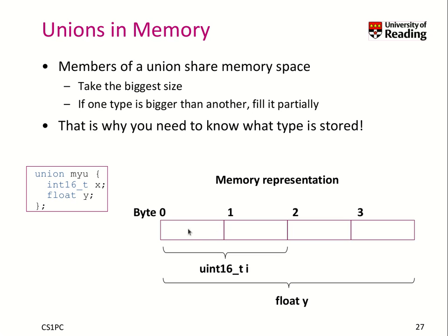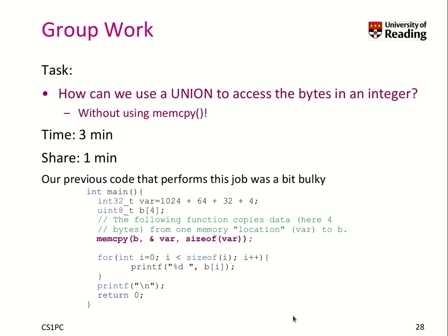So what happens if I first assign a floating point value y? I write those 4 bytes with some value. And if I then assign x, I would overwrite only those 2 bytes with whatever content I store into it — which then, if you would try to read y again, would probably lead to a problem.